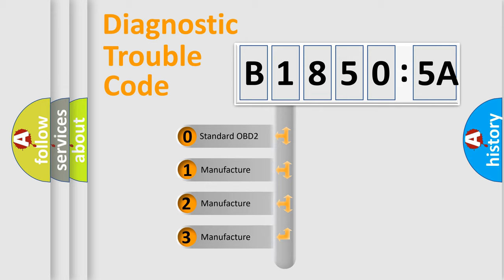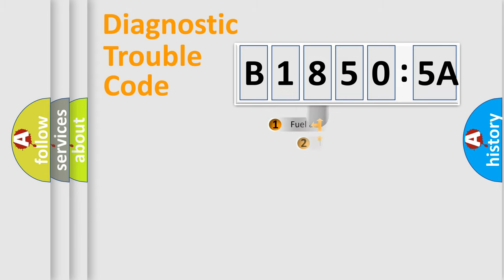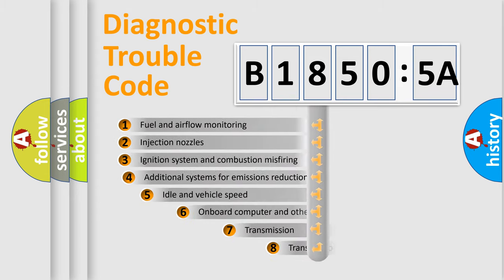If the second character is expressed as zero, it is a standardized error. In the case of numbers 1, 2, or 3, it is a more specific expression of the car-specific error.